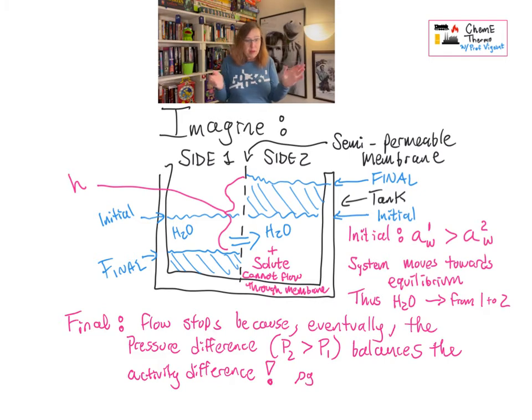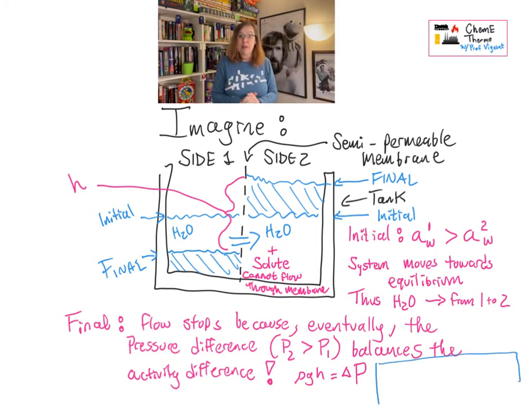So this thing that just happened is osmosis. And osmotic pressure is that pressure difference that exactly balances, eventually, the activity difference between the two sides. And that's all well and good if you want to explain cells bursting because you put them in pure water, or your fingers perhaps getting wrinkly in the bathtub.